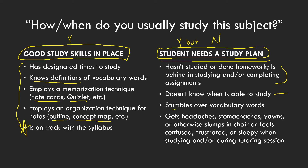If they stumble over vocabulary words, I keep coming back to this because it's such a big indicator of whether the student is understanding what's going on and whether they're studying correctly. If they stumble over vocabulary words, they probably haven't realized they need to look those words up and truly understand them in order to understand the subject.